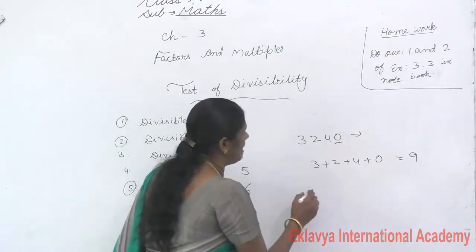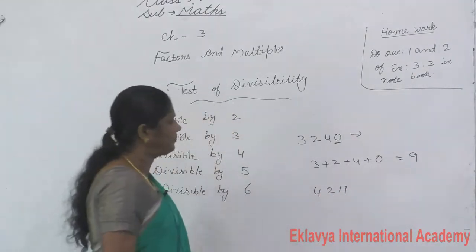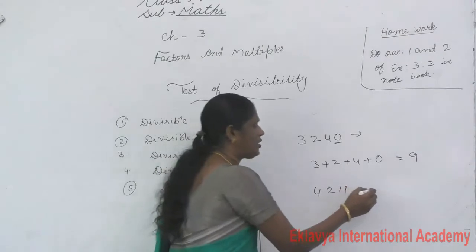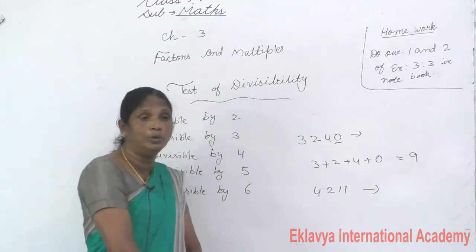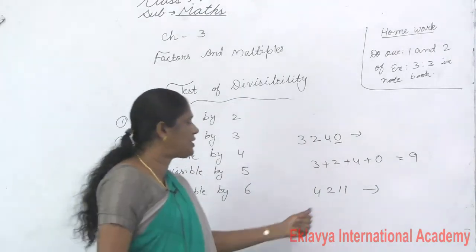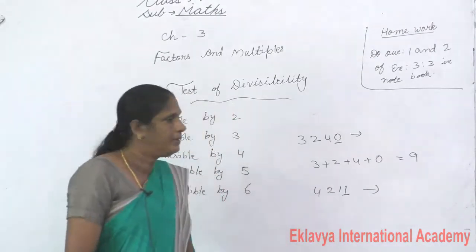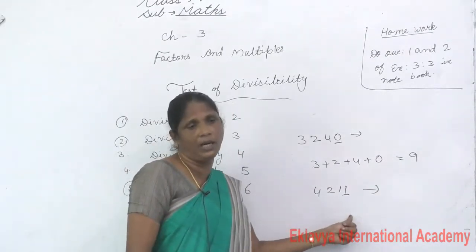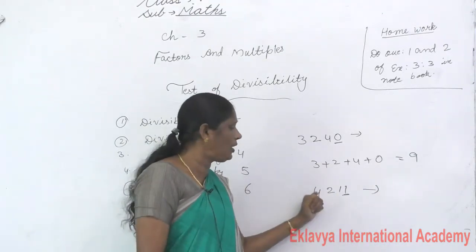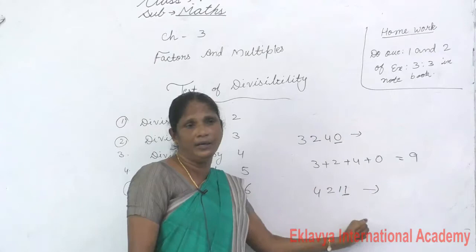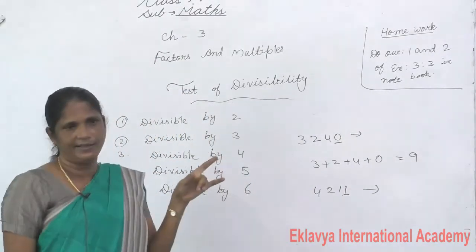One more example: 4211. Check the 1's place — 1 comes in the 1's place, so this number is not divisible by 2. Therefore 4211 is not divisible by 6.